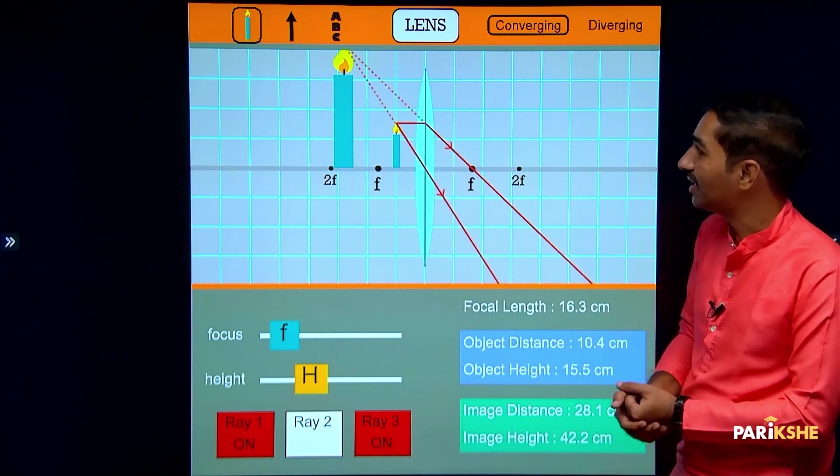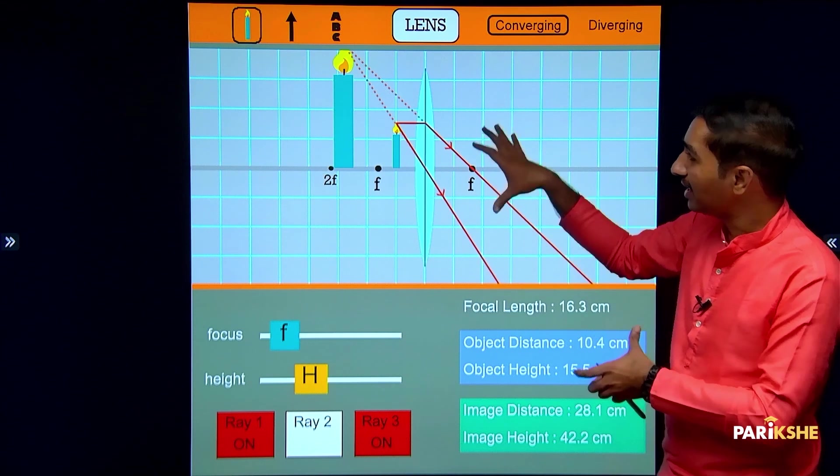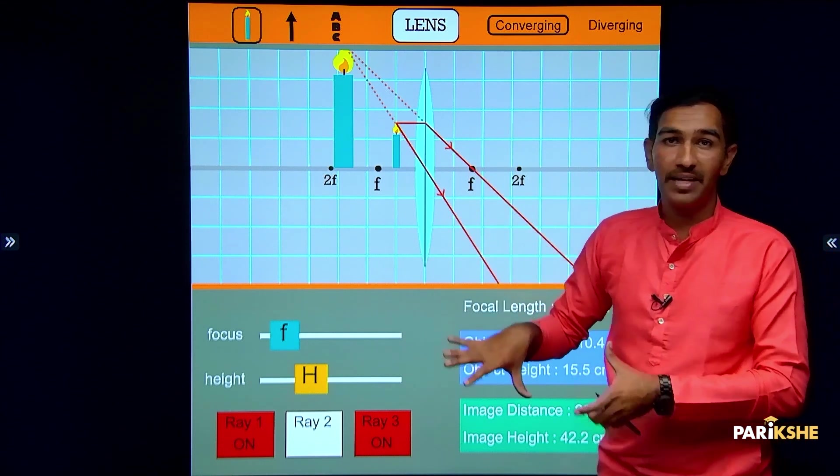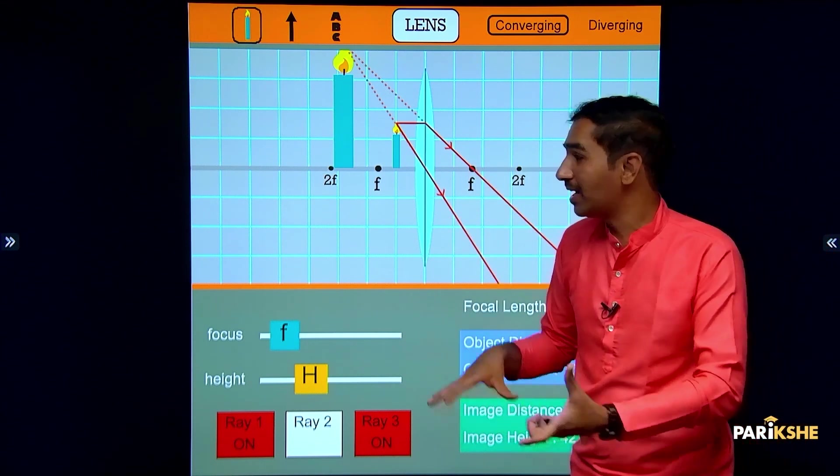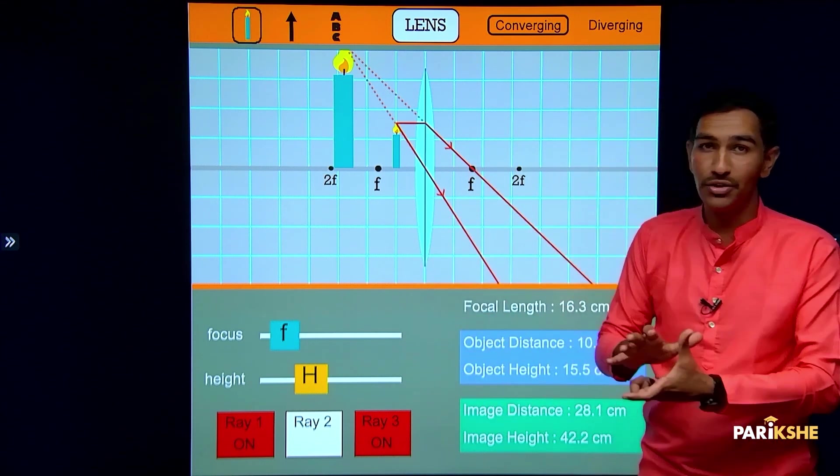These are the six different cases of image formation by a convex lens. Now let's look at concave lens image formation, but first let's review a summary.